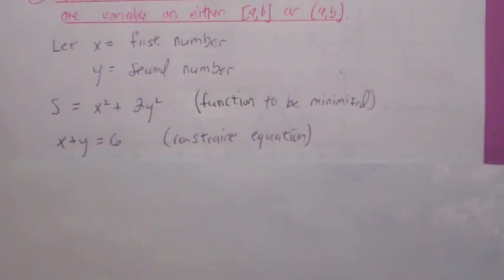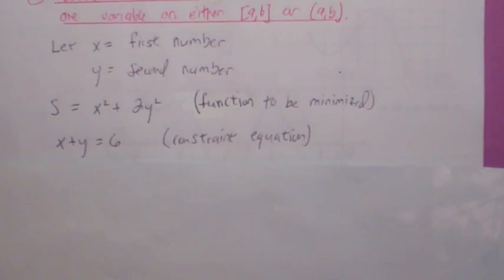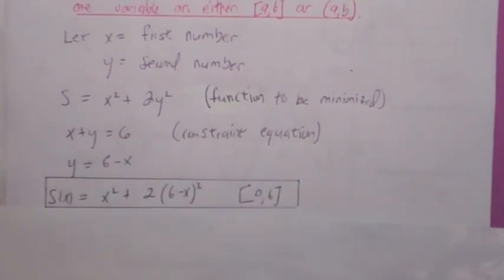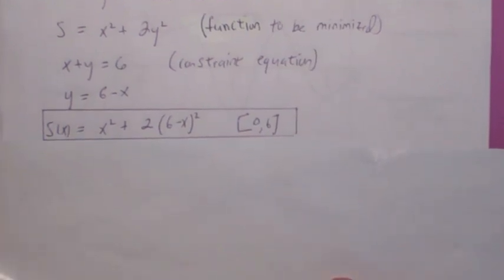The constraint equation is the other information that's given, namely that the sum of the two numbers is 6. You can solve that equation for y. When you plug back into the function s, I've gotten s as a function of just one unknown.